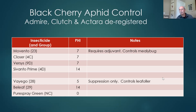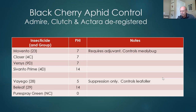Outside of Admire, we've relied on Movento and Closer — those have probably been our mainstays for black cherry aphid control in recent years. Remember that Movento requires an adjuvant, and that product will also control apple mealy bug, which is a vector of little cherry virus. Savanto Prime is another quite effective product, and a new product called Versus in Group 9D is another very good aphicide, though we don't have much practical field experience with it yet.